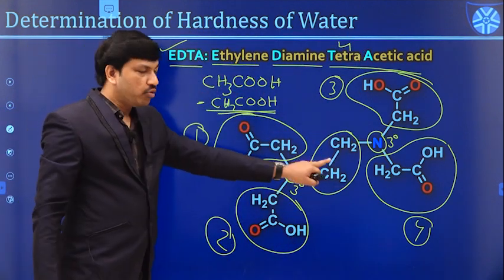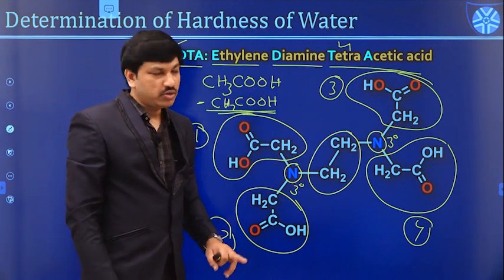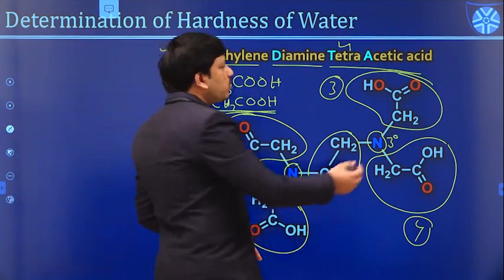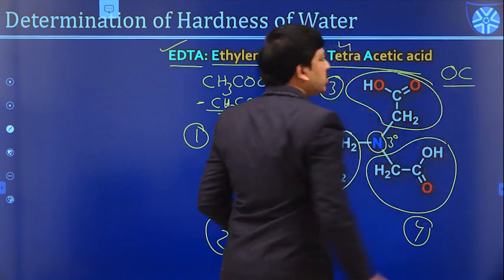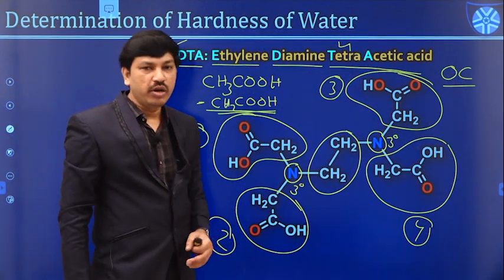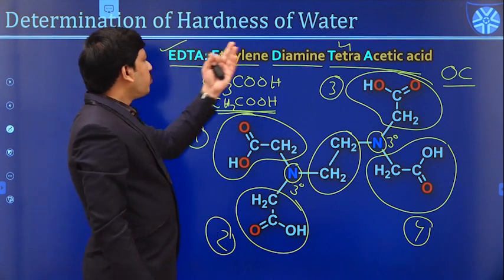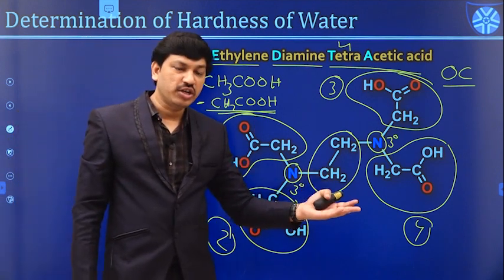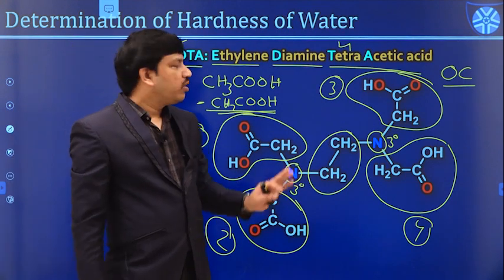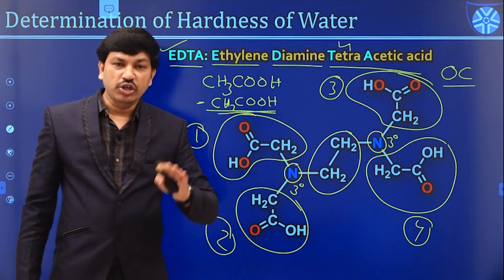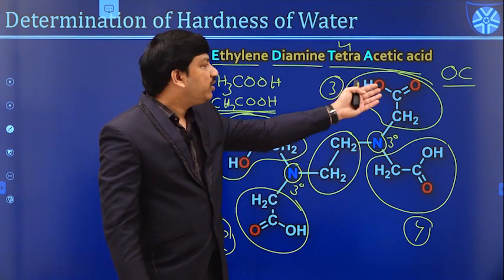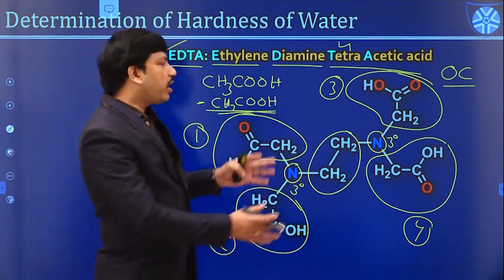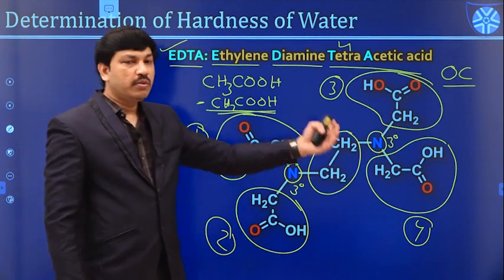So there is one ethylene group, two amine groups, and four acetic acid groups — making EDTA: ethylene diamine tetraacetic acid. It is a purely organic compound and is less soluble, or only partially soluble, in water. Since titration requires a standard solution, we want to use EDTA solution, but the problem is EDTA is partially soluble in water, so we cannot directly use it as a standard solution.